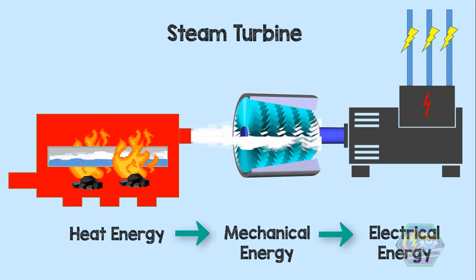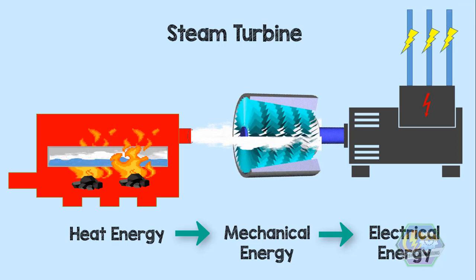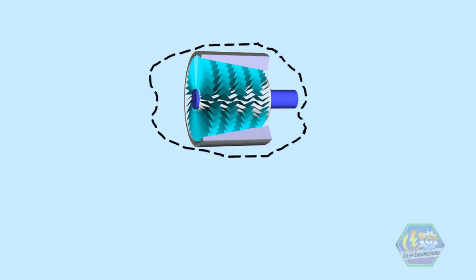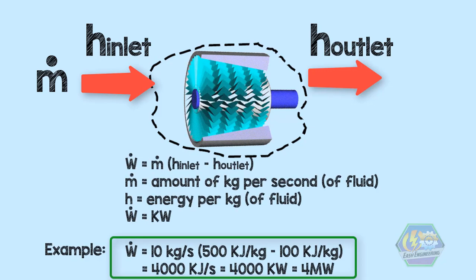Since no process is perfectly efficient, there will be exhaust steam with mass and energy on it. By enclosing this turbine with a boundary and using the inlet and outlet mass and energy that flows through it, we can compute the power of a turbine. That's how significant this topic is.